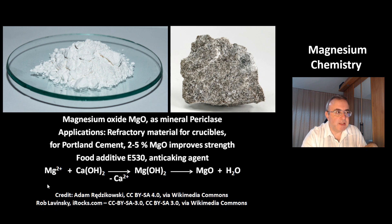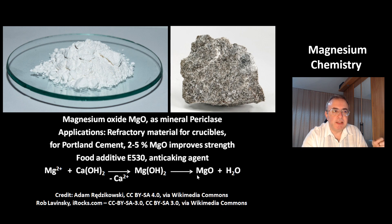And this is how MgO is made: Mg²⁺ ions react to form Mg(OH)₂, and when heated, you get MgO.